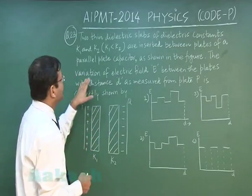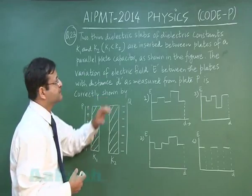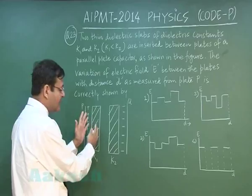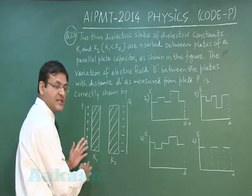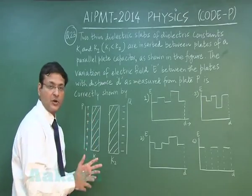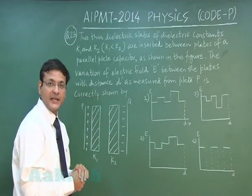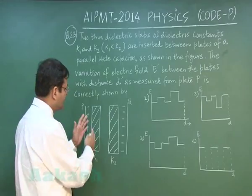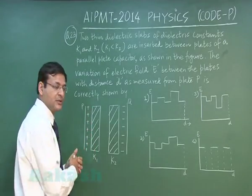Now the variation of electric field E: you see there is a gap where electric field remains constant, the moment you are coming into dielectric it decreases, again if you come into air remains constant, again you come to dielectric it decreases. And remember that electric field divided by dielectric constant, that will be the electric field inside a dielectric.